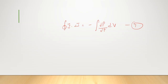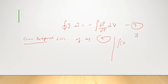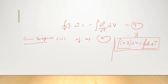Now apply Gauss's Divergence Theorem to the left-hand side of equation number four. Gauss's Divergence Theorem is used to convert a surface integral to a volume integral. For any vector A: ∮A·dS equals ∫(∇·A) dV. So the closed surface integral of A·dS equals the volume integral of the divergence of A.